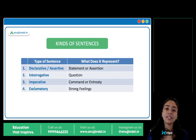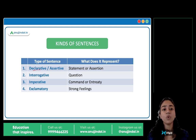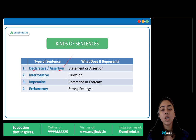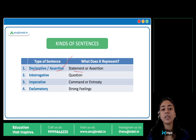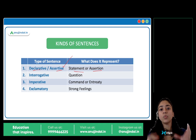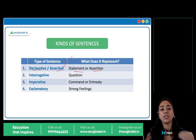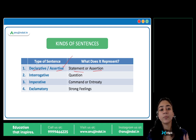There are four types of sentences. First is declarative or assertive sentences. Any sentence which makes a statement, an assertion, or a declaration — a statement is made, an assertion is made, something is declared.